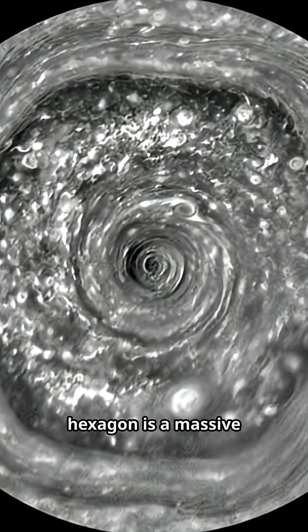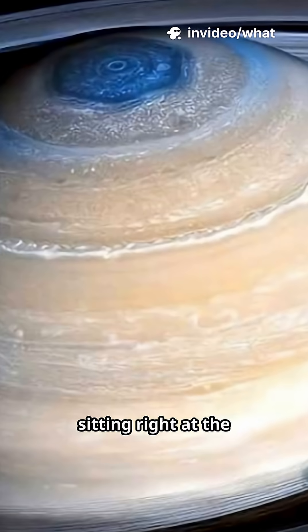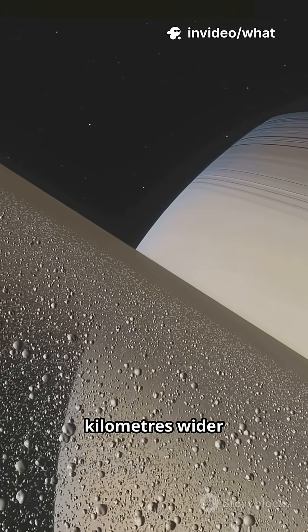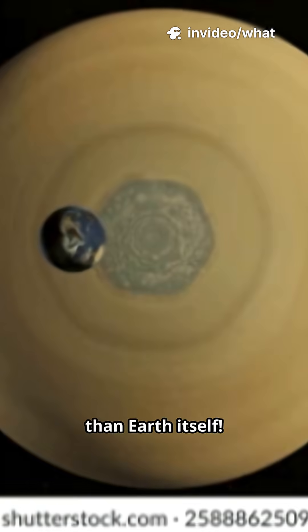Saturn's famous hexagon is a massive six-sided jet stream sitting right at the planet's north pole. Each side stretches about 13,800 kilometers, wider than Earth itself.